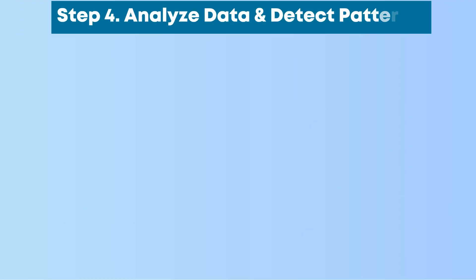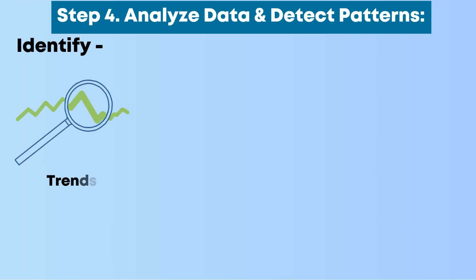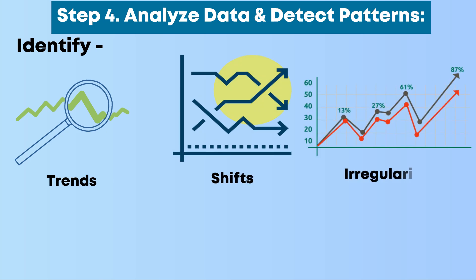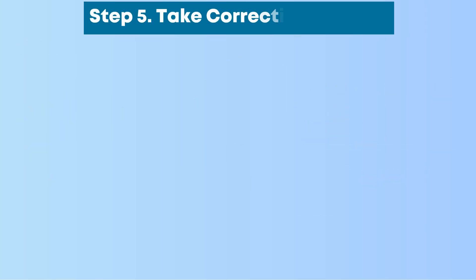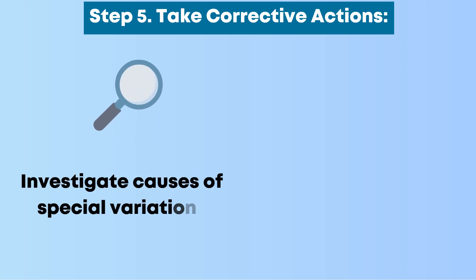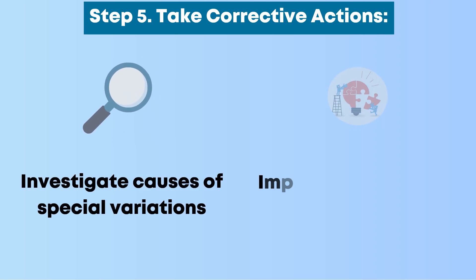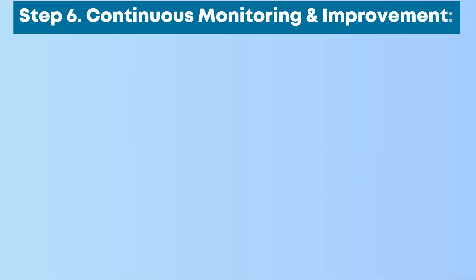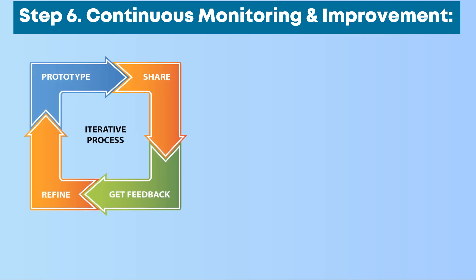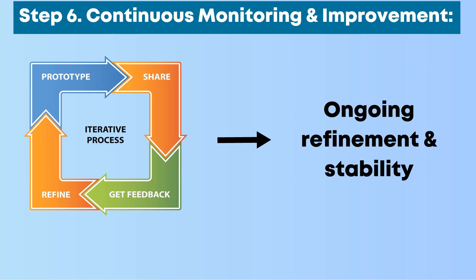Step 4: Analyze data and detect patterns — identify trends, shifts, or irregularities in the control charts. Step 5: Take corrective actions — investigate causes of special variations and implement corrective measures. Step 6: Continuous monitoring and improvement — SPC is an iterative process that promotes ongoing refinement and stability.